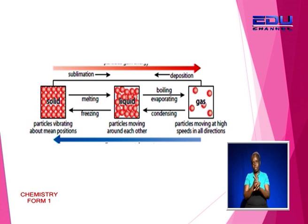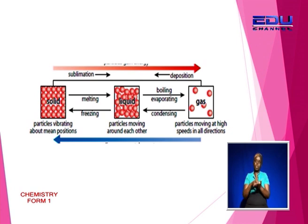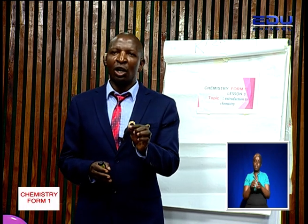In primary school, you also learnt that you can convert a solid directly into a gas without passing through the liquid state. The process of converting a solid into a gas without passing through the liquid state is called sublimation. You can also convert a gas directly into a solid without condensation, and that process is called deposition.